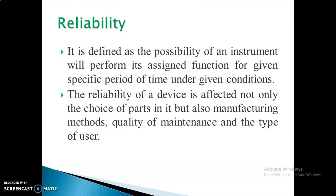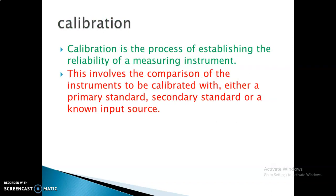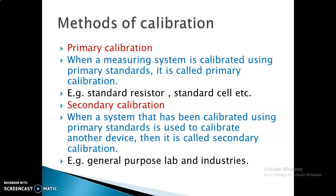Reliability is the possibility that an instrument will perform its assigned function for a given specific period of time. The reliability of a device is affected not only by the choice of parts but also by manufacturing. Calibration is the comparison of a calibrated instrument — it is a process of establishing the reliability of a measuring instrument. Methods include primary calibration, such as using a standard resistor or standard cell, and secondary calibration, where instruments are calibrated through industry or laboratory.